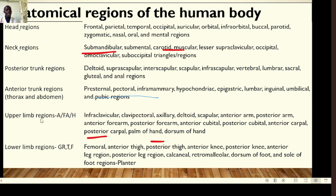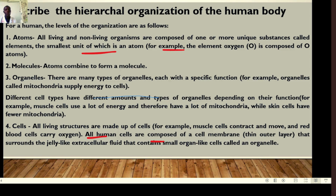For the upper limbs, we'll be studying the arm, forearm, and hand. It's important to note correct terminology: the hand, the forearm, and the arm. For the lower regions, we look at the gluteal region, the thigh region, and the foot. These are the different anatomical regions we will be examining.